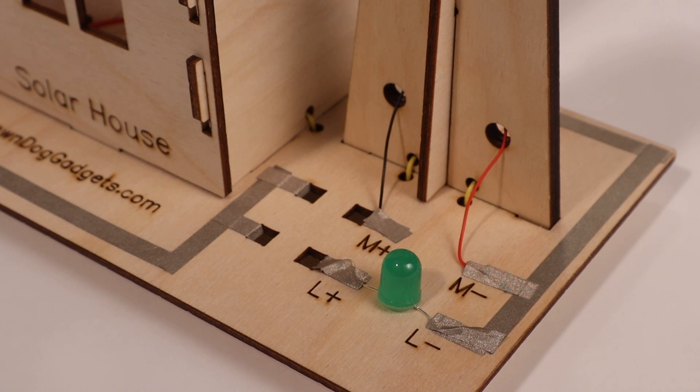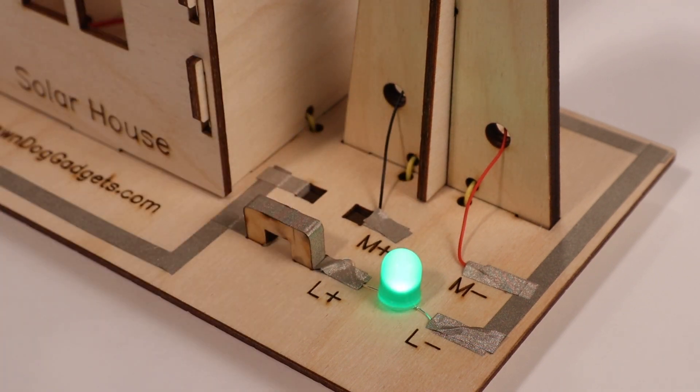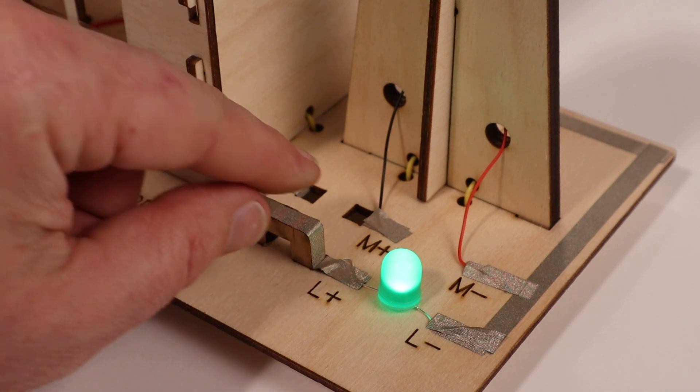When the switch is placed in the holes, it will bridge the gap in the circuit and allow current to flow, turning on the motor or the LED. If the switch is just a little loose, you can always add another layer of maker tape to either the switch or to the base.